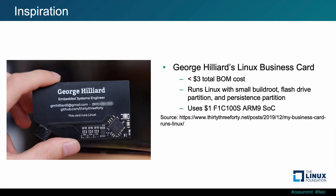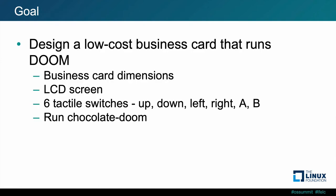The inspiration for this project comes from a blog post I read about someone named George Hilliard who designed and assembled an embedded Linux system in the profile of a business card. It has a total BOM cost of less than $3 and runs Linux with a small buildroot, a flash drive partition, and a persistence partition. He uses a $1 ARM9 SoC from a company called Allwinner called the F1C100S. George Hilliard's business card inspired me to extend his idea and attempt to design a low-cost business card that runs DOOM.